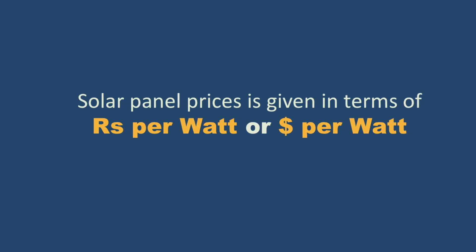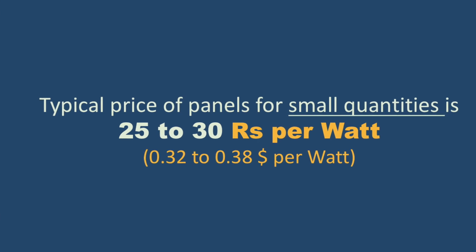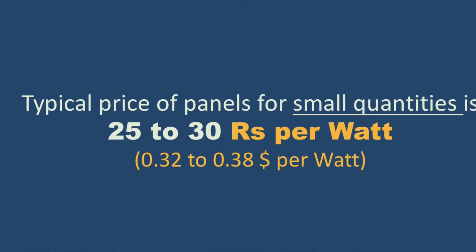Once you know the power rating, the next question is: what is the cost of a solar panel? Because panels are specified in terms of wattage, cost is also given in terms of rupees per watt or dollars per watt — similar to buying sugar in terms of rupees per kilogram. If you are buying a solar panel in smaller quantities, such as a few hundred or a few kilowatts, you need to pay around 25 to 30 rupees per watt.